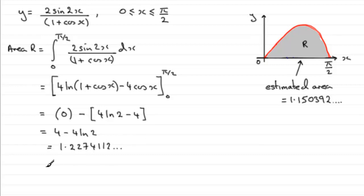So when it comes to working out what that error is in the area, let's just come down here. The error will equal the larger area minus the smaller area, and the larger area has to be the real area, so that's 1.2274112 and so on.